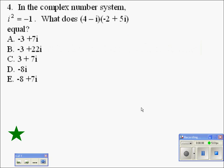Let's take a look at the solution to number 4. In the complex number system, i squared equals negative 1, what does 4 minus i times negative 2 plus 5i equal?